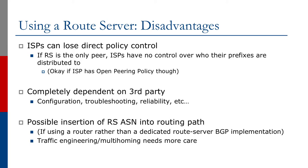The ISP becomes completely dependent on a third party for the configuration, troubleshooting, and reliability of the route server. If there's a problem with the route server, the ISP will lose peering and connectivity with all peers learned through it. There's also a possible insertion of the route server's AS number into the routing path, which happens if using a router rather than a dedicated route server BGP implementation. If this occurs, traffic engineering and multi-homing need more care.